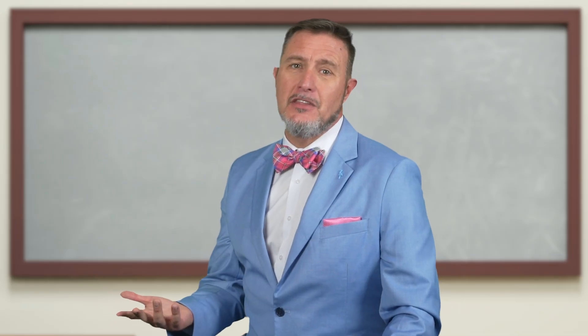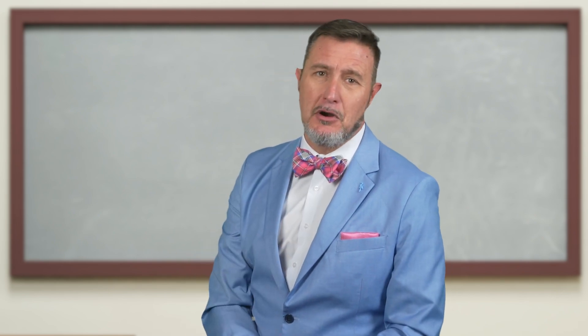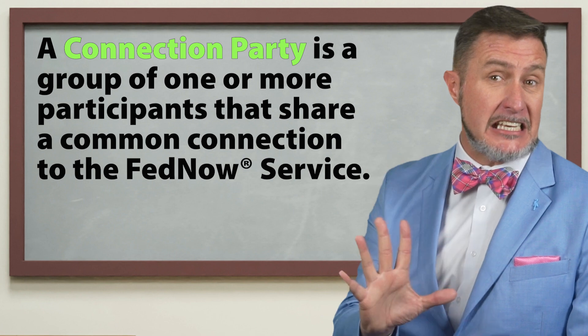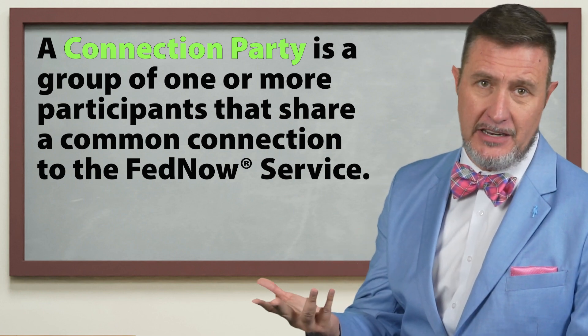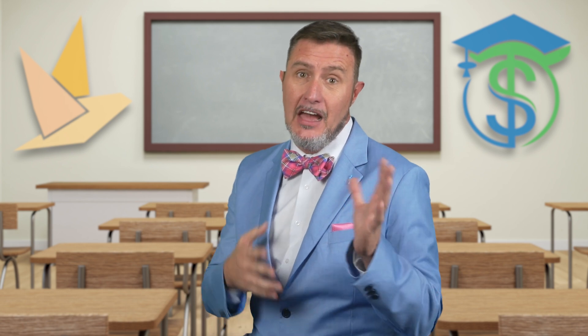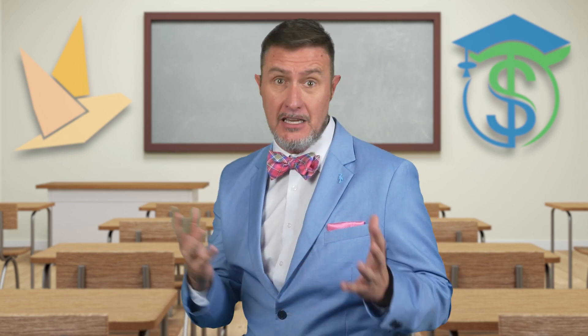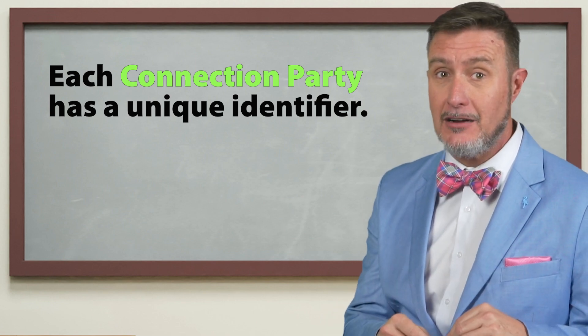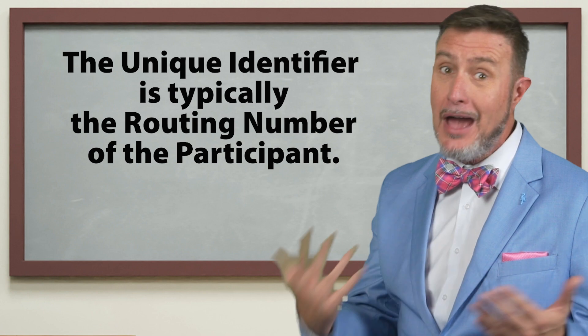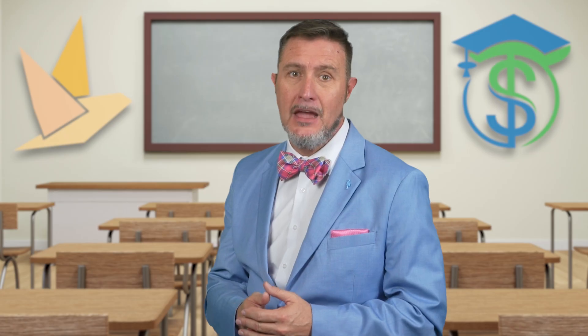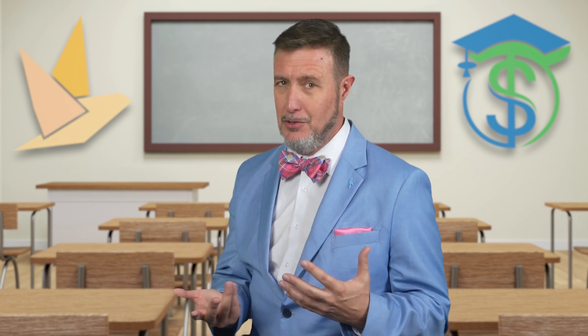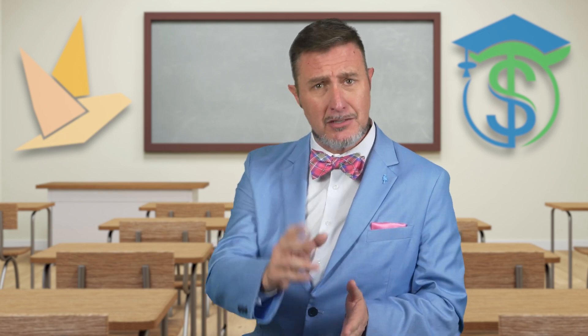So let's simplify this to make it easier to understand. When it comes to the connection party: a connection party is really just a group of one or more participants that share a common connection to the FedNow service — it could just be one. A connection party acts like a hub or the connection for sending and receiving messages on behalf of the participants it represents, so it really is going to be like a service provider. Each connection party has a unique identifier, which is typically a routing number of the participant that owns or is part of that connection party. Connection parties are configured and managed by the Federal Reserve Banks, but you give them the information for that to work.